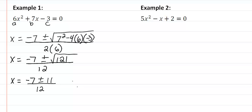And we have negative seven minus 11 will give us a negative 18 over 12. So that means x equals negative three halves and one third.